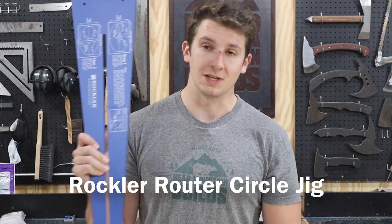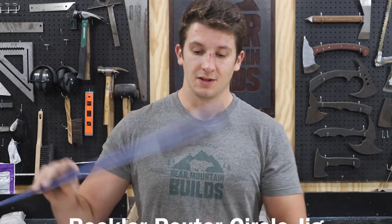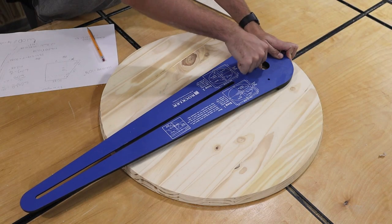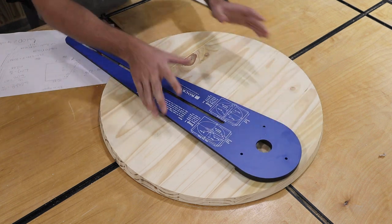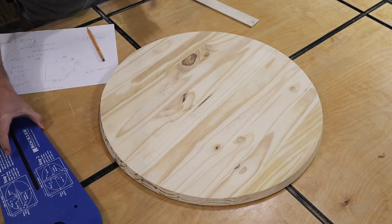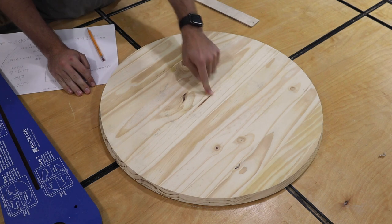So what I'm going to be using is this router circle jig. It'll be pinned in place, the router will mount here, and it's just going to go around and make the cut in a circle. Now, before I can use this, though, I need to find the center of this circle.